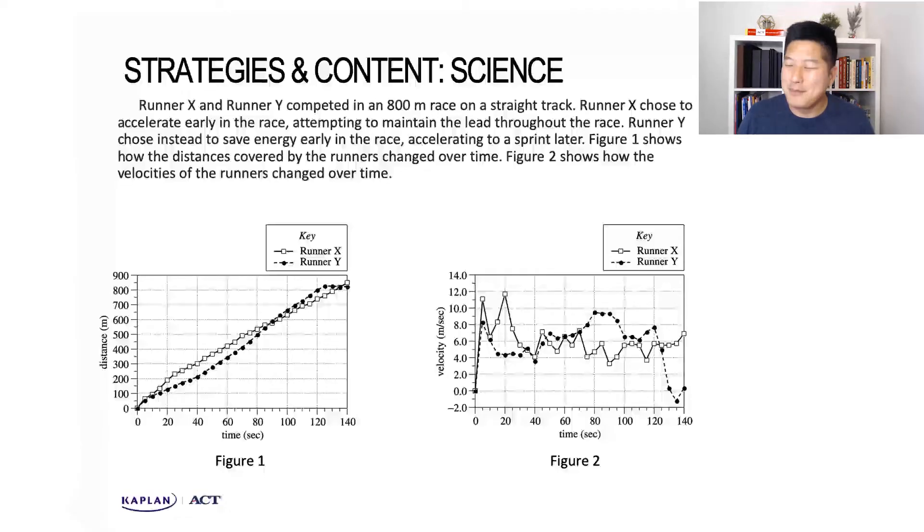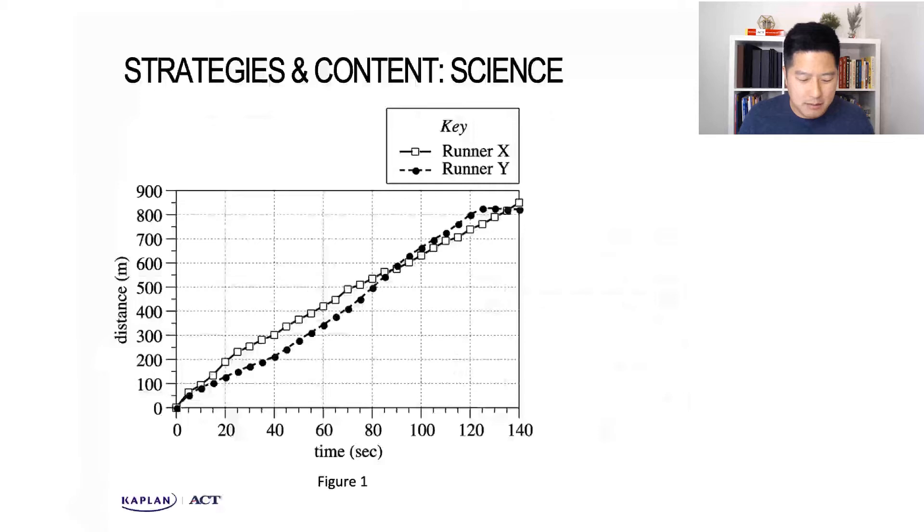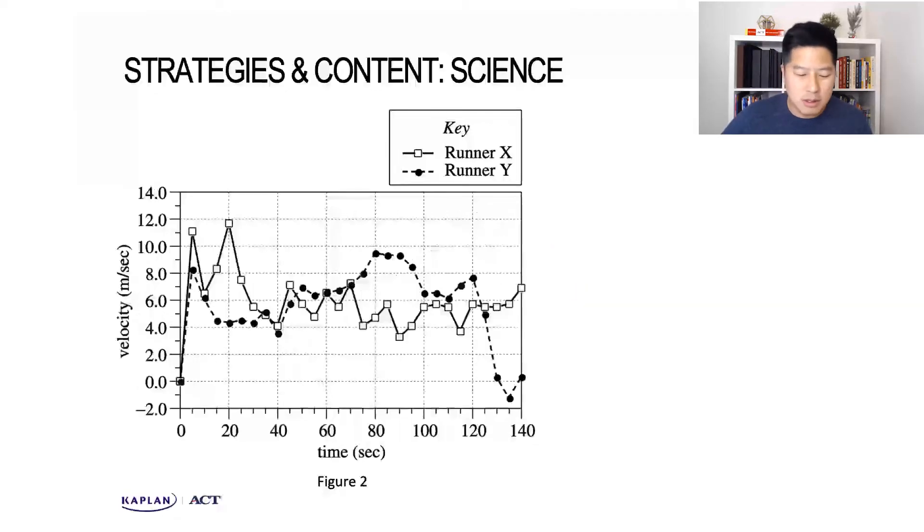In this first figure, we've got the independent variable of time—how long the runner is taking—on the x-axis. On the y-axis, we're measuring the dependent variable distance, which is dependent on the time that the runner spends.